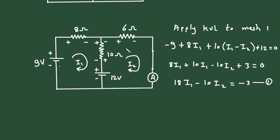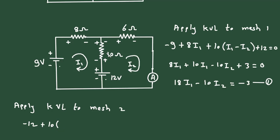Next, apply KVL to mesh number 2. Starting from this point, it will be minus 12, then plus 10. This 10 Ohm is common to both mesh 2 and mesh 1, so it will be 10(I2 minus I1), then plus 6I2, equals 0.